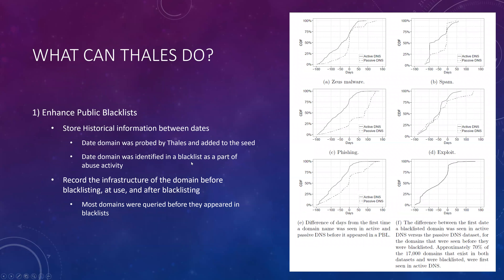What can Thales do? They built it to enhance public blacklists. Thales stores historical information, recording the date a domain was first probed and added to the seed, and the date that domain was identified in a blacklist as part of abuse activity. They recorded the infrastructure of the domain before blacklisting, during use, and after blacklisting. Most domains were queried before they appeared in the blacklists.